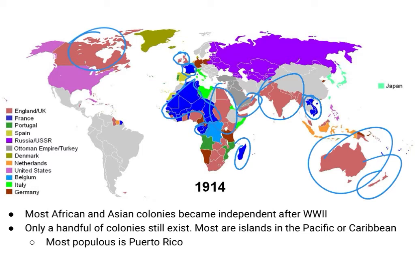You'll also notice up here we have Russia, and then more territory that Russia is controlling. This down here is British. This right here is Portugal — Portugal here and Portugal here. So it gives you a really good sense as to how far these colonies had expanded in the early 1900s. Before World War I, most African and Asian territory was controlled by European colonies.